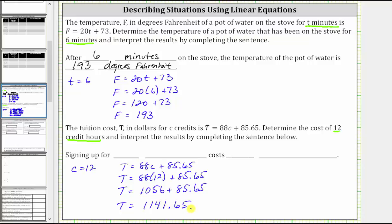And now let's complete the sentence to interpret the results. Signing up for 12 credits costs $1,141.65.